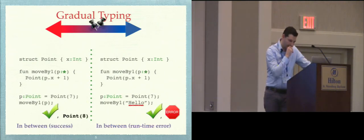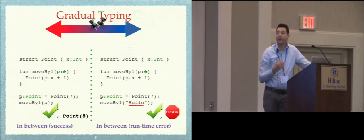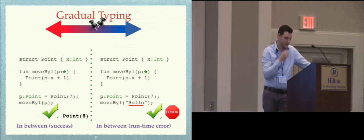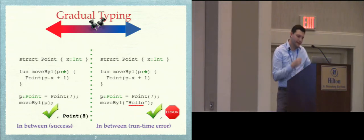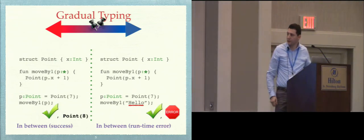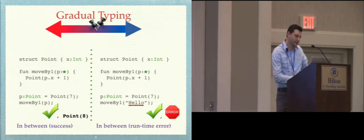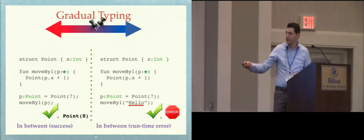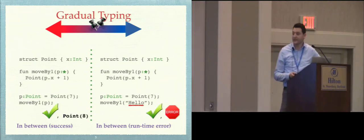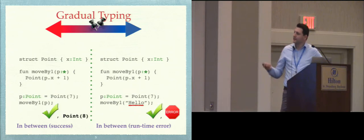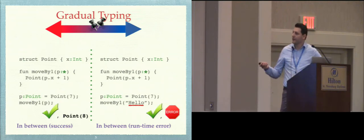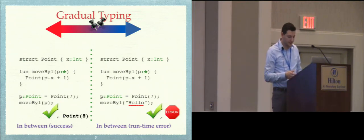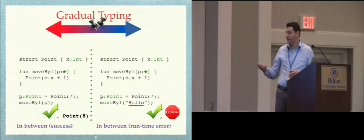Gradual Typing also accommodates programs that are in the middle of the spectrum — partially typed. Here the function 'move by one' accepts a parameter of dynamic type, so it can accept a point as presented. It will type check and run correctly. On the other side, a similar program will type check for the same reasons, but here we treat a string as a point, and so we will get an error at runtime.